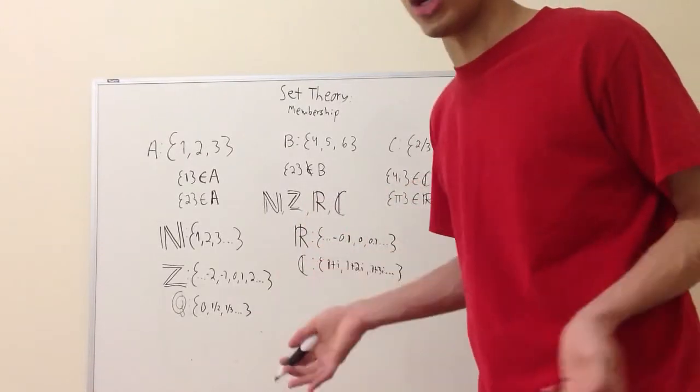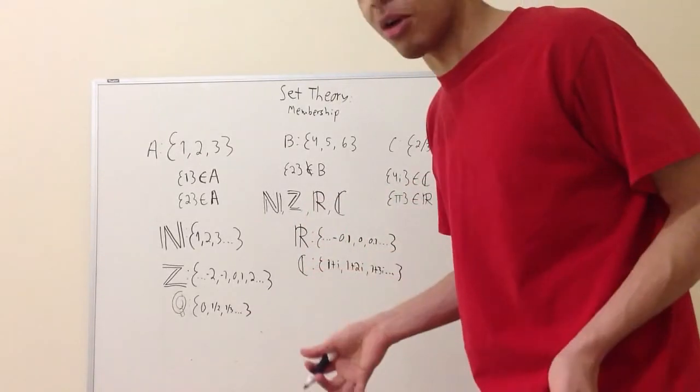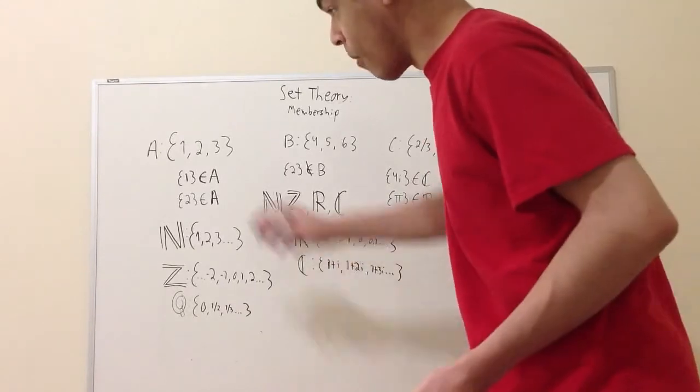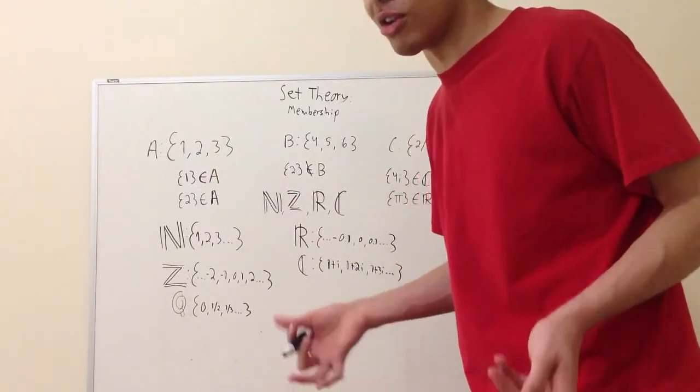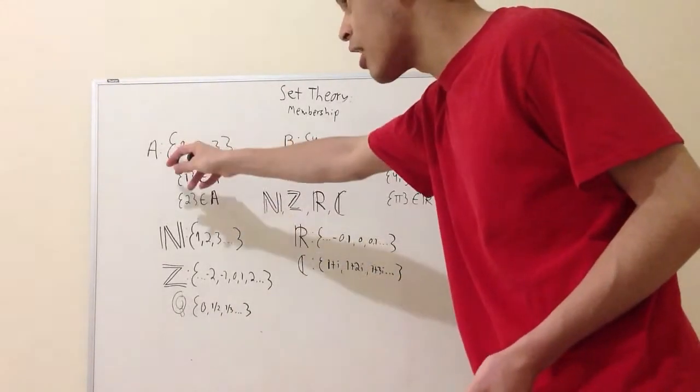A set is really just a collection of objects. Typically it's numbers but it can really be anything. We're going to focus on numbers for the purposes of this video series because it just makes sense to do that. So we have set A.